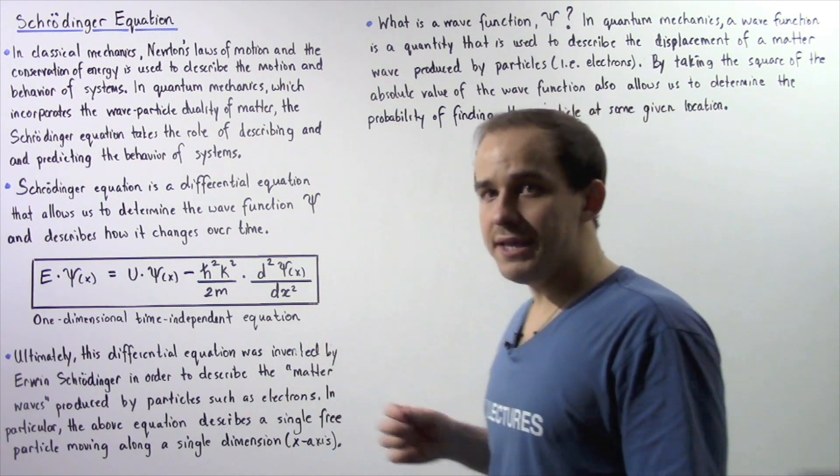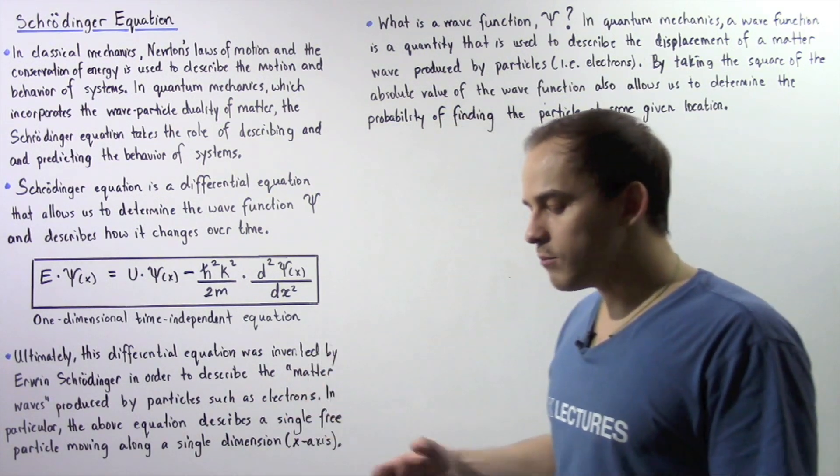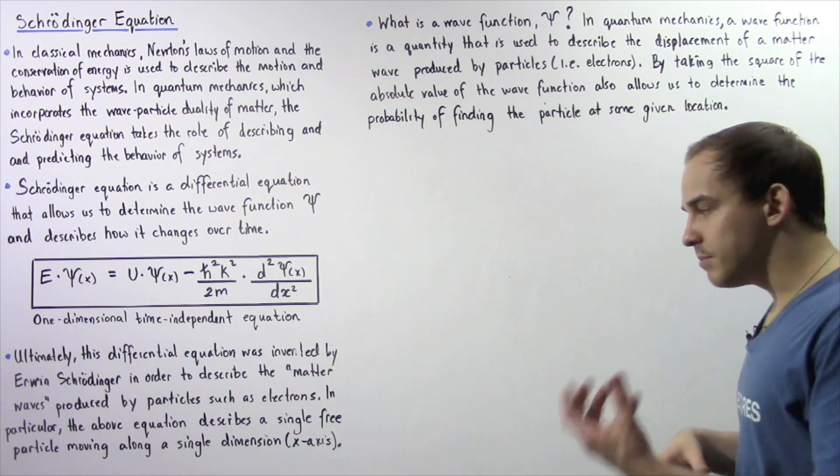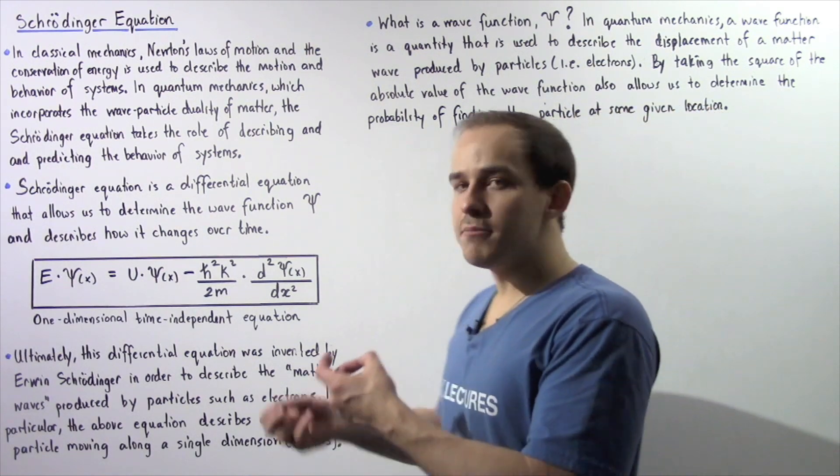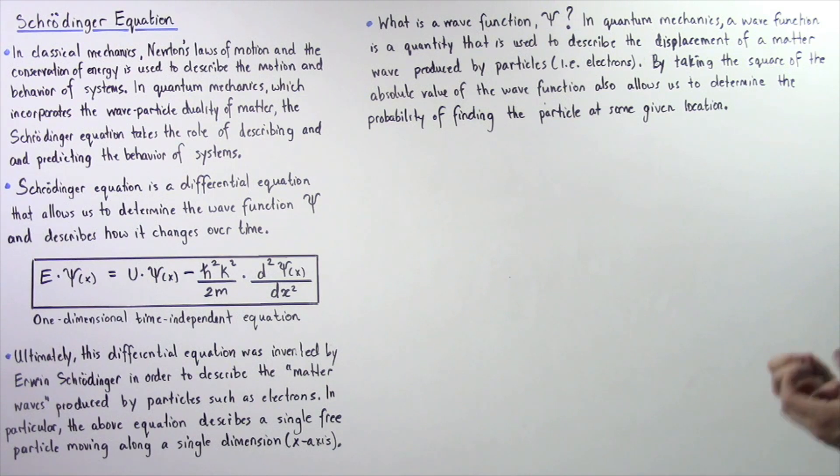So the free particle simply means our electron does not actually feel any form of force. So that implies the energy and the momentum of our particle, of our electron, remains constant.